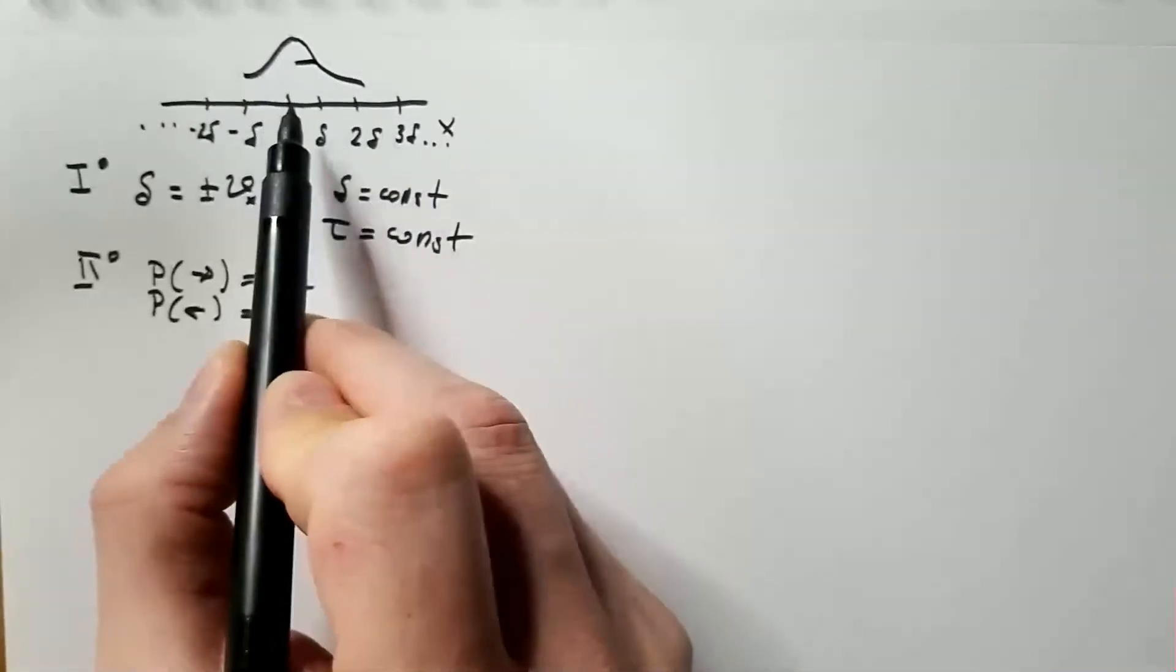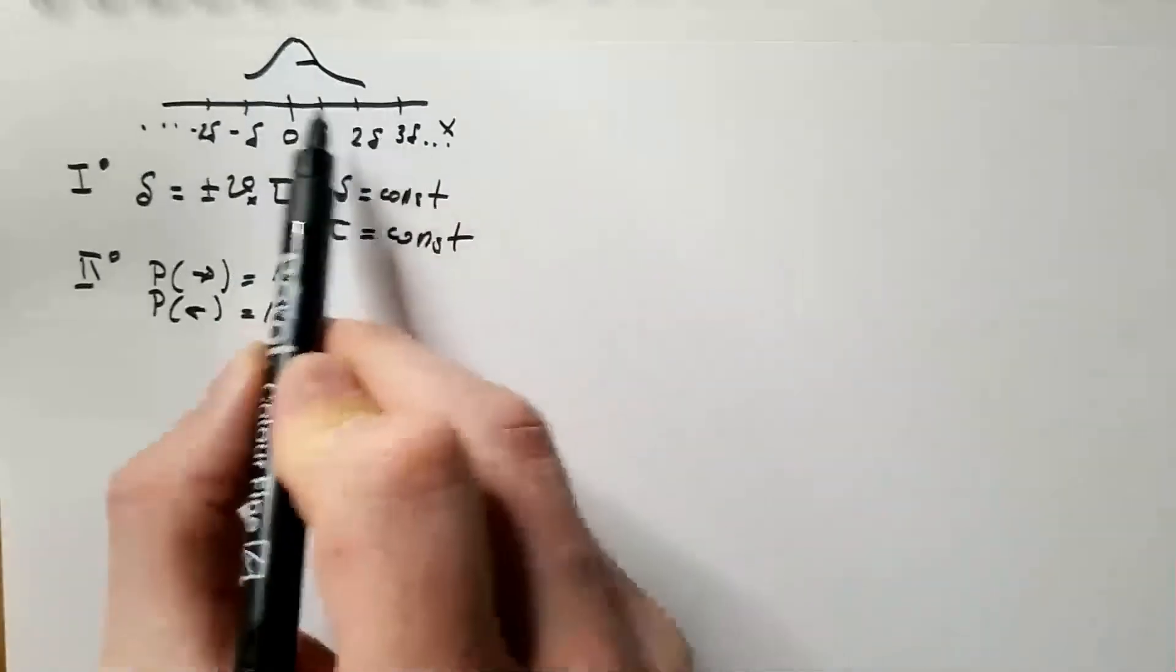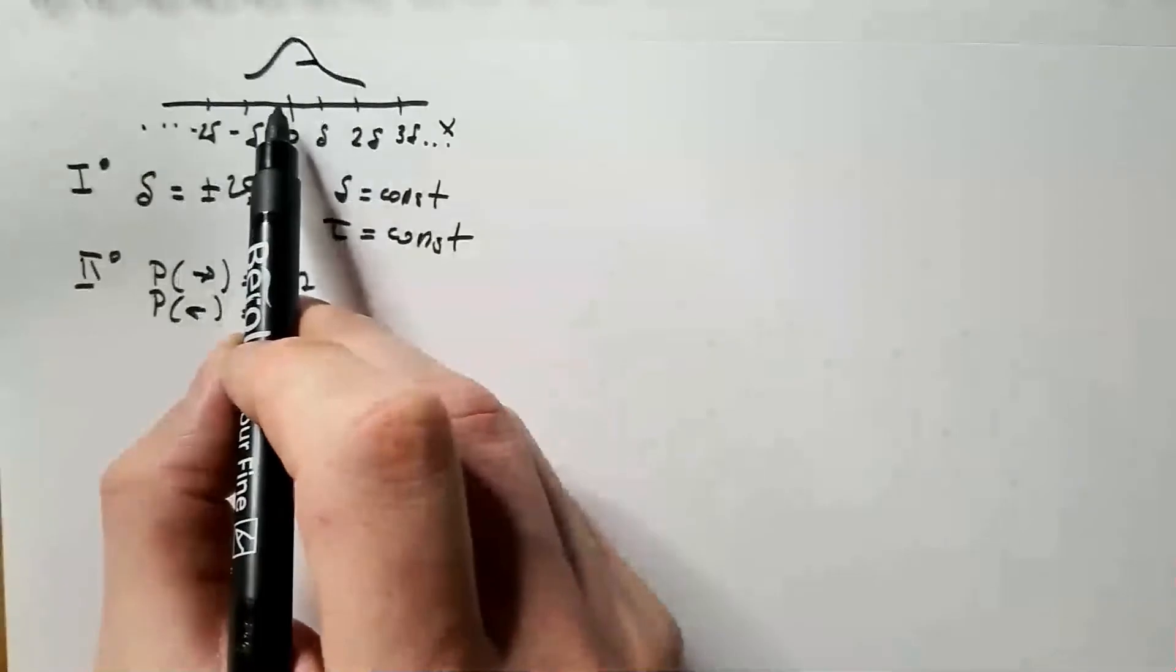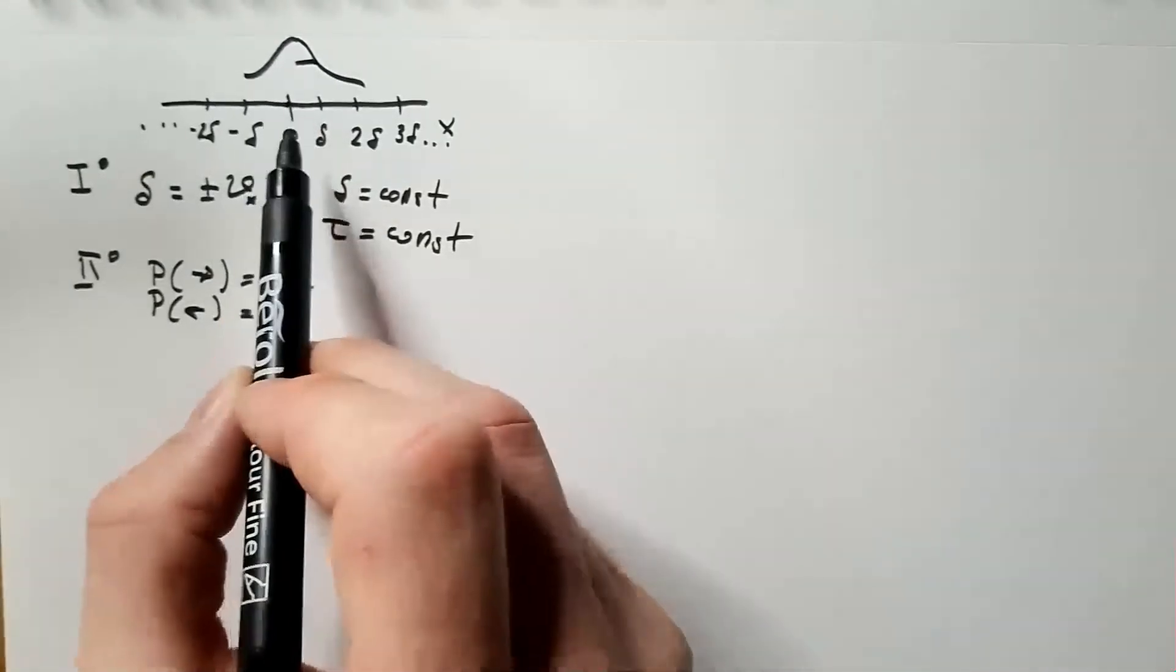How far, after some time t, how far it is likely to go in either of the directions. Although, on average, the most likely position of the particle is at the beginning, x equals zero.